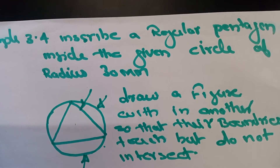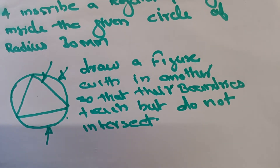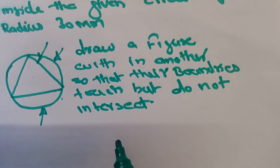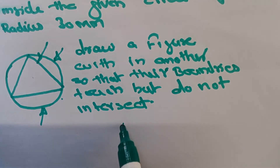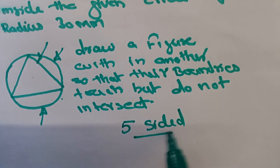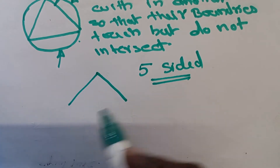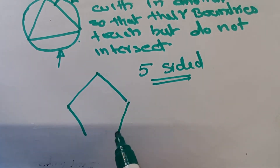Here, we have to do the problem of inscribing a regular pentagon. What do we mean by a pentagon? We already know that a pentagon is a five-sided plane figure. This is the shape of a pentagon.